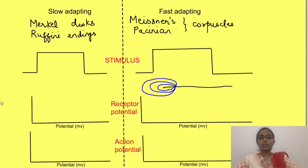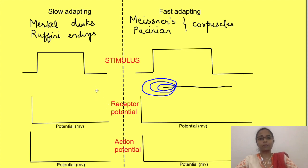We will now see action potential generation in two types of receptors: slowly adapting receptors and fast adapting receptors.